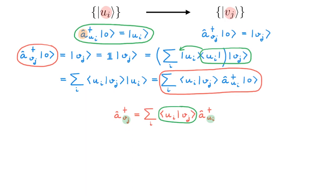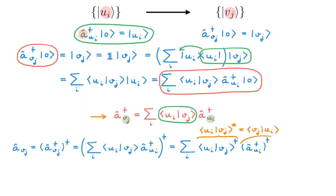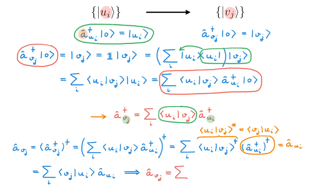We can now figure out how the annihilation operators transform by simply taking the adjoint of the expression for creation operators. We get A_Vj = (A_Vj†)†. Substituting A_Vj† with the result above, and moving the adjoint inside the individual sum terms, the scalar ⟨Ui|Vj⟩ becomes ⟨Ui|Vj⟩* = ⟨Vj|Ui⟩ using the conjugation property of the scalar product, and (A_Ui†)† is simply the annihilation operator A_Ui. So putting everything together: A_Vj = Σ_i ⟨Vj|Ui⟩ A_Ui. This means the annihilation operators also transform through the overlaps between the two sets of basis states.